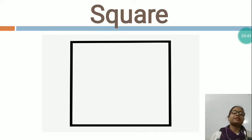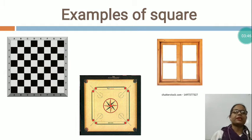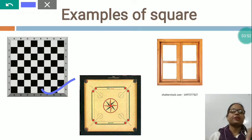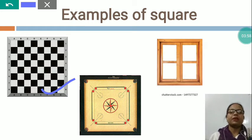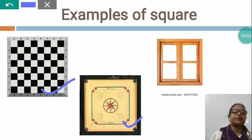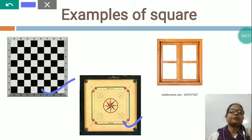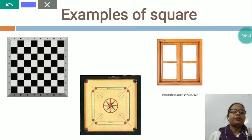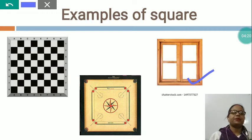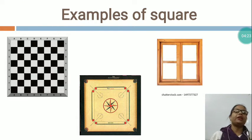I would like to show you some examples of square. This is a chess board — have you seen a chess board? Which shape? Square shape. Now this is a carom board — have you seen the carom board? Do you like to play carom board? Which shape? This is square shape. Now this is a window — which shape? Square shape. These all are the examples of square shape.